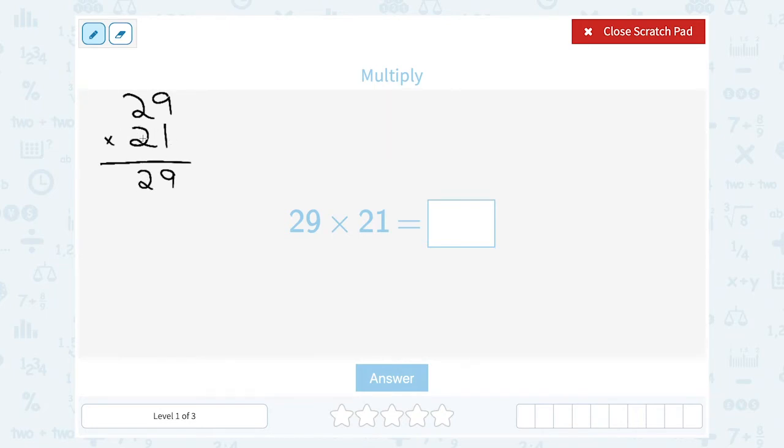Now I'm ready to work with the 2. But notice the 2 is in the tens place, right? It's 20, not just 2. So what I'm going to do is put a 0 in the ones place, and then I can multiply the 2 by both numbers. So 2 times 9 is 18. So I'm going to write my 8, carry the 1. 2 times 2 is 4, plus that extra 1 is 5.